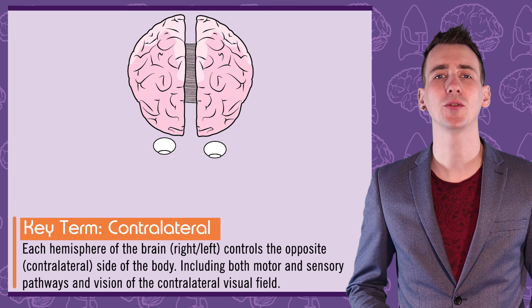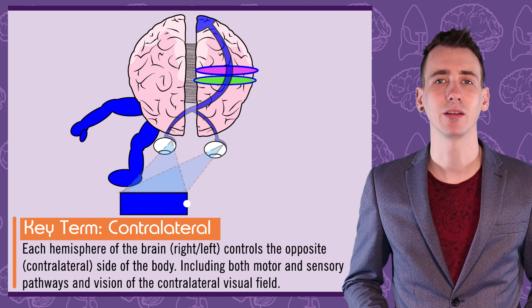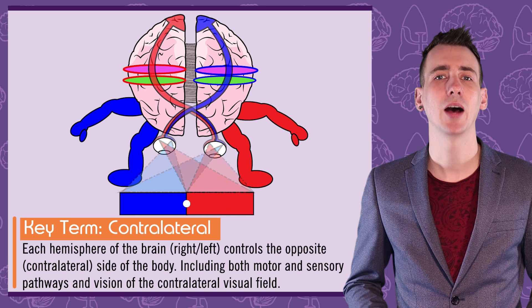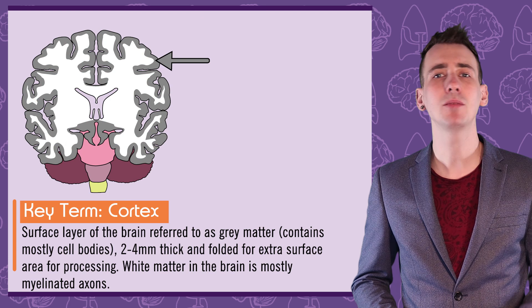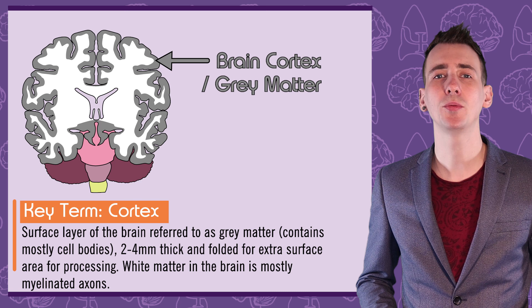The visual, motor and somatosensory cortices are contralateral, meaning that the right hemisphere moves and senses the left side of the body, as well as dealing with visual information from the left visual field of both eyes — and the left hemisphere moves and senses the right side of the body, dealing with the right visual field of both eyes. The cortex means the thin outside layer of the brain — a mass of cell bodies where much of the brain's processing takes place, often termed grey matter because it's mostly cell bodies and its axons are unmyelinated. The cortex is between two and four millimetres thick and distinctively folded to give it a greater surface area.